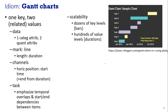For the Gantt chart, when doing research you need to provide a time plan with all tasks. You can draw a Gantt chart easily to show the timeline. One key, two related values — one categorical attribute and two quantitative attributes. Mark is a line representing duration. Channels include horizontal positions for starting time plus ending duration. Tasks emphasize temporal overlaps and start or end dependencies between items.